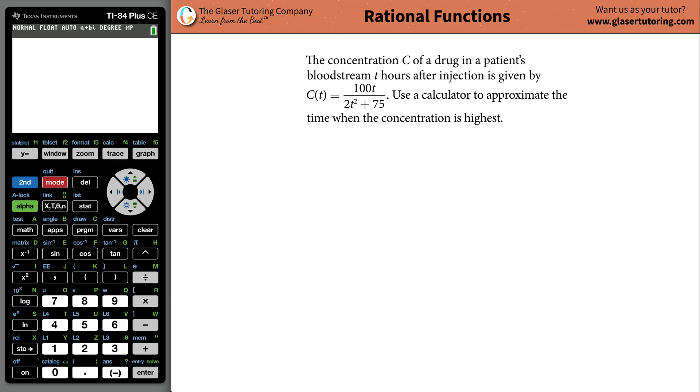Let's analyze a rational function. The concentration C of a drug in a patient's bloodstream after T hours after injection is given by this function where the concentration is equal to 100 multiplied by the amount of hours that pass, divided by 2 times the amount of hours squared, plus 75. Use a calculator to approximate the time when the concentration is the highest.